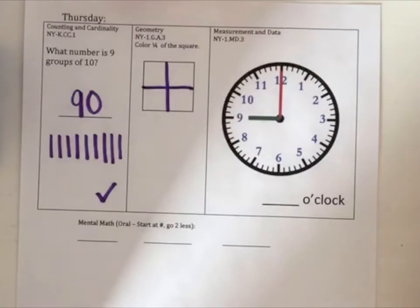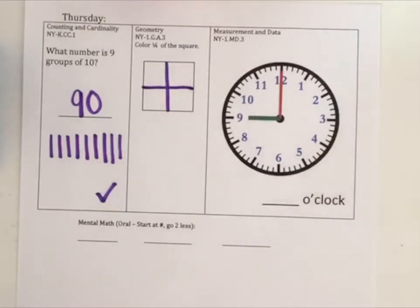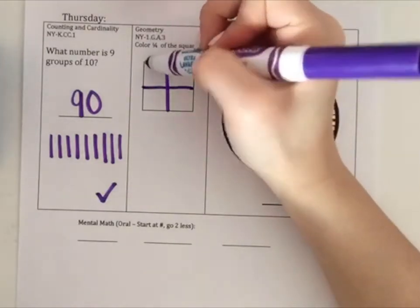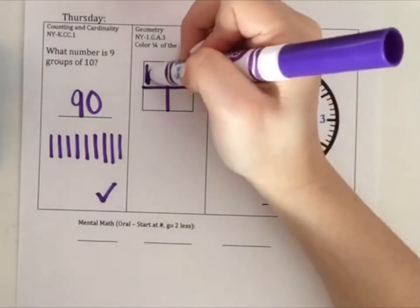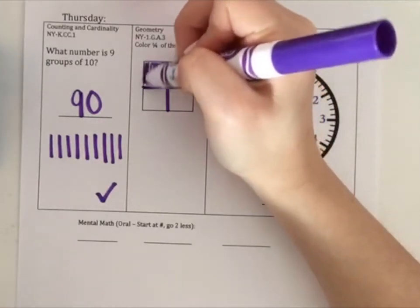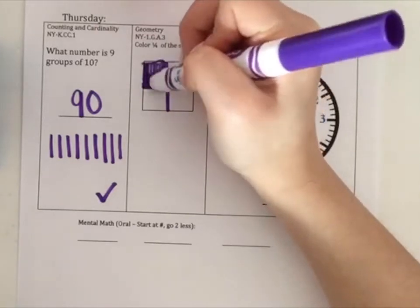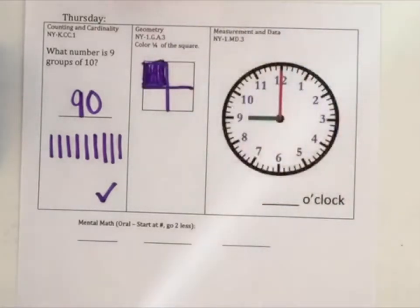Now we have four parts in the square, and we need to color one-fourth of it, or a quarter of it. That means I'm only going to color one of these four parts. So I can color just one part here, and that will give me one-fourth of the square colored. Did you get that? Give yourself a check if you did.